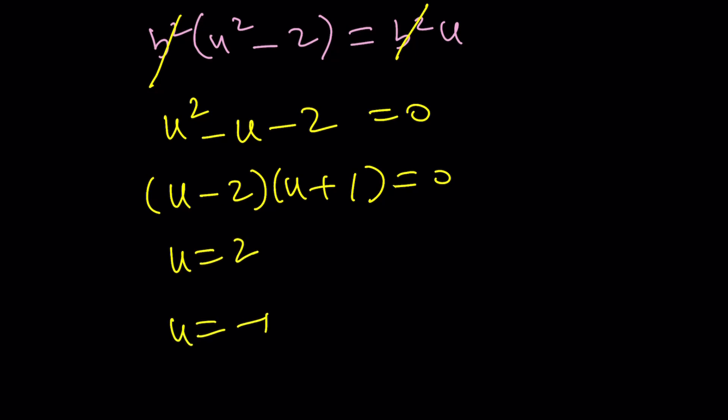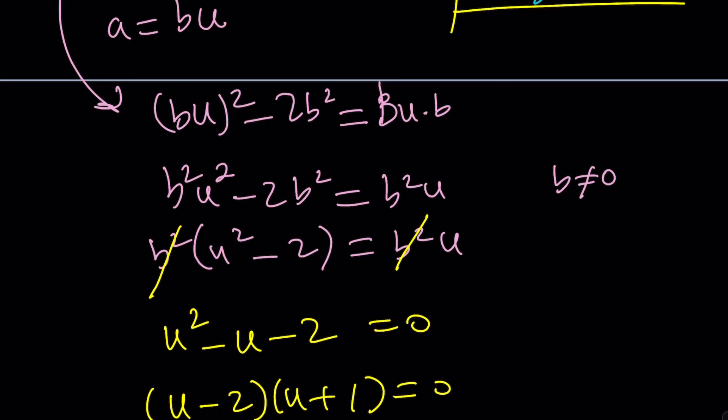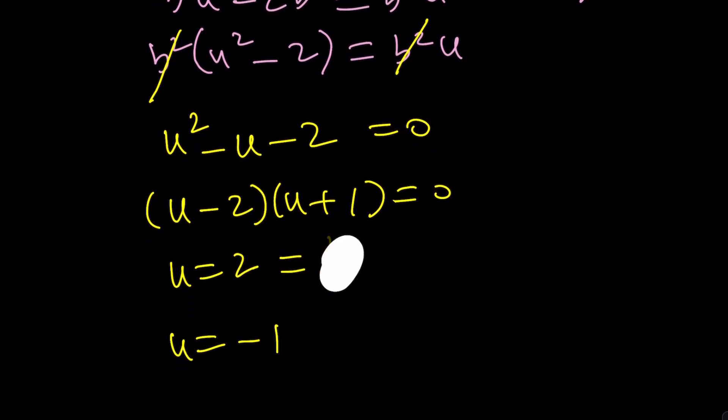But u is a over b, remember? We're going to set this equal to a over b. I think it was a over b, not b over a. I'm used to using b over a most of the time, but this time anyways. From here we get a equals 2b. And from here we get a equals negative b. These are actually the exact same values that we found before in a different way.